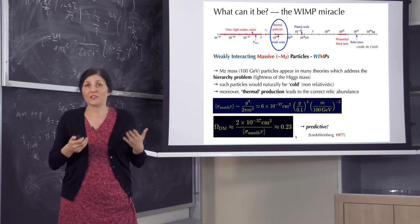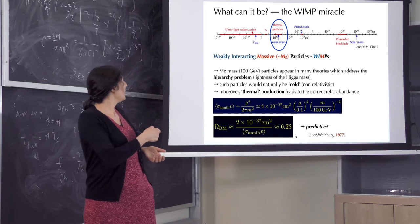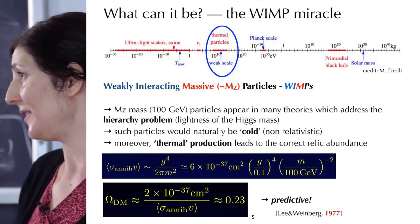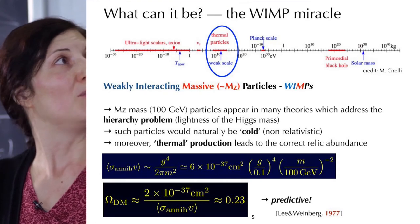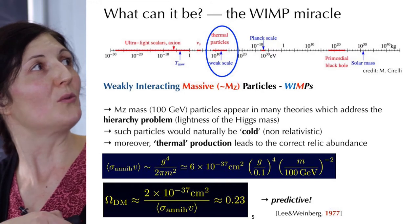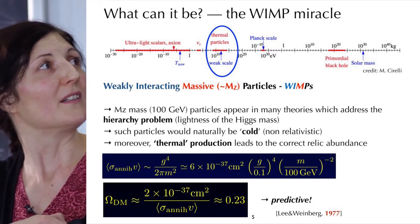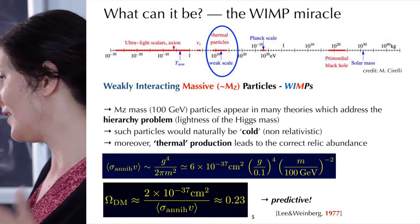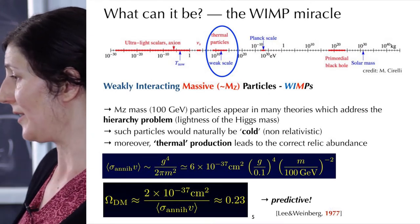Wondering what it could be, this particle, scientists proposed various, various possibilities. Basically, putting the mass of particles between 10 to the minus 40 kilograms to 10 to the minus 30 electron volts. So there are many, many possibilities, and we still do not know which one is this.